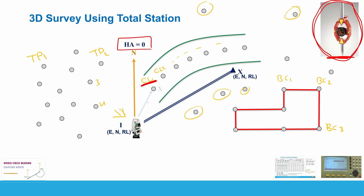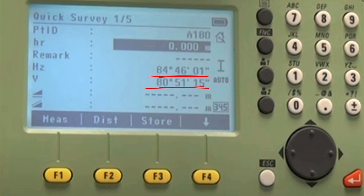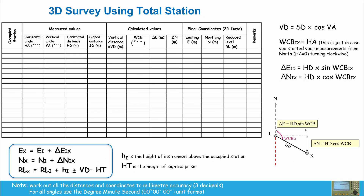Use a mini prism to collect measurements for the first point — for example, the first point on the center line of the road. Locate the mini prism over that point, sight it, and look at the screen of your total station to collect four numbers: horizontal angle, vertical angle, horizontal distance, and slope distance. In some total stations you may have the vertical distance instead of the slope distance, which is also fine. For center line 1, example values might be: horizontal angle 10°, vertical angle 89°00'00", horizontal distance 12.325 m, slope distance 12 m.